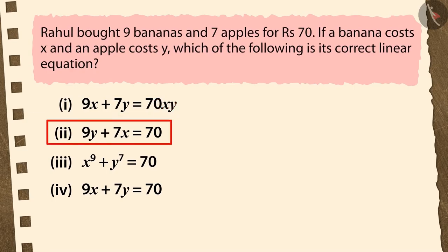If you have chosen the second option, that's the wrong answer. 9Y plus 7X shows the price of 9 apples and 7 bananas, while the question refers to 9 bananas and 7 apples.